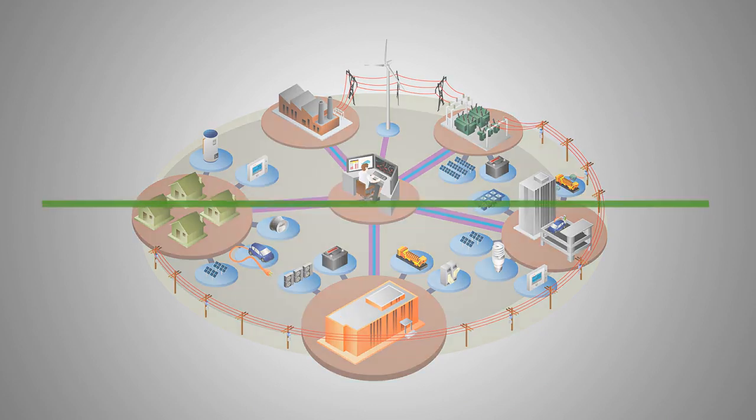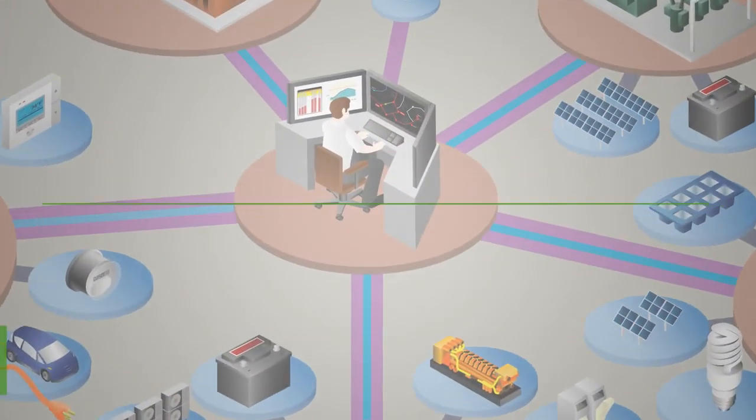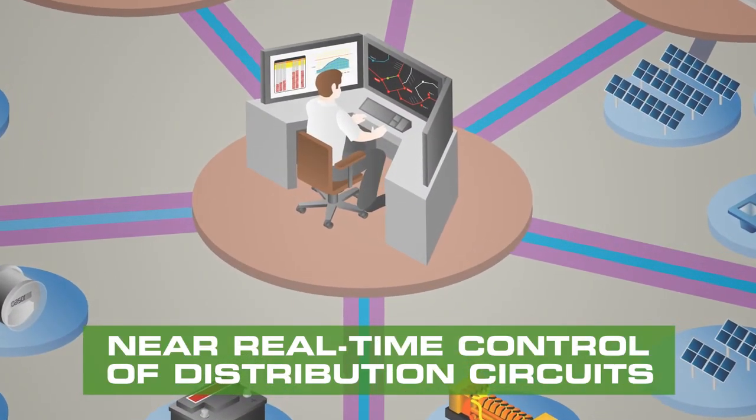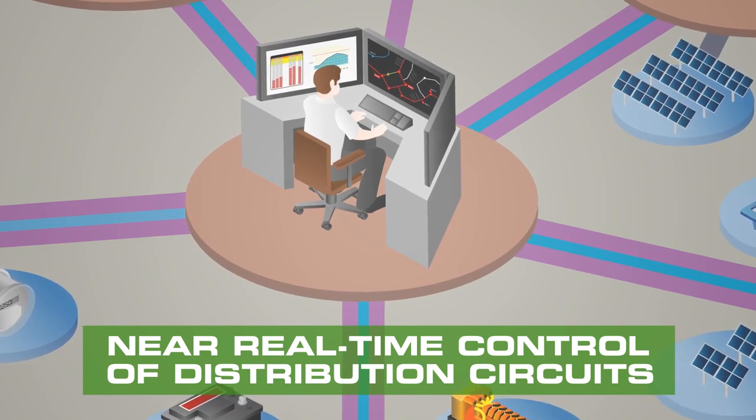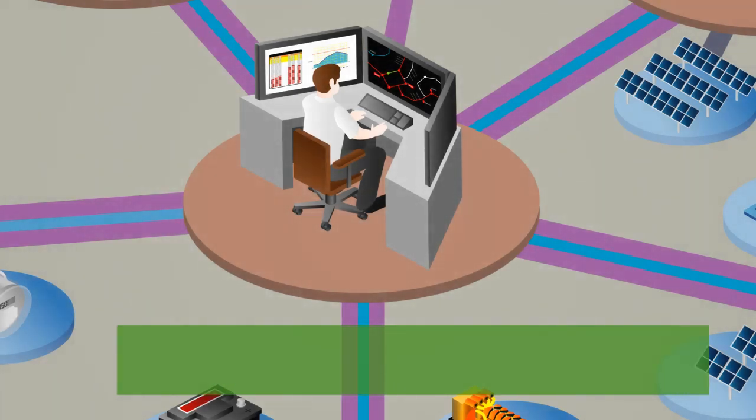The conservation voltage reduction and volt-var optimization concept involves near real-time control of distribution circuits to minimize losses and manage voltage within an acceptable range. Demand is reduced by actively managing voltage in a lower, but still acceptable band.